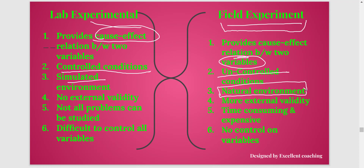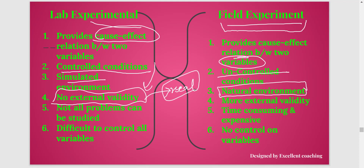Next, in a lab experiment, external validity is very low. External validity means something performed in a lab may not show the same result when it actually happens in real life. If you see a certain reaction of people occurring in a lab experiment, they may not react in the same way when they are actually in the same situation in real life.